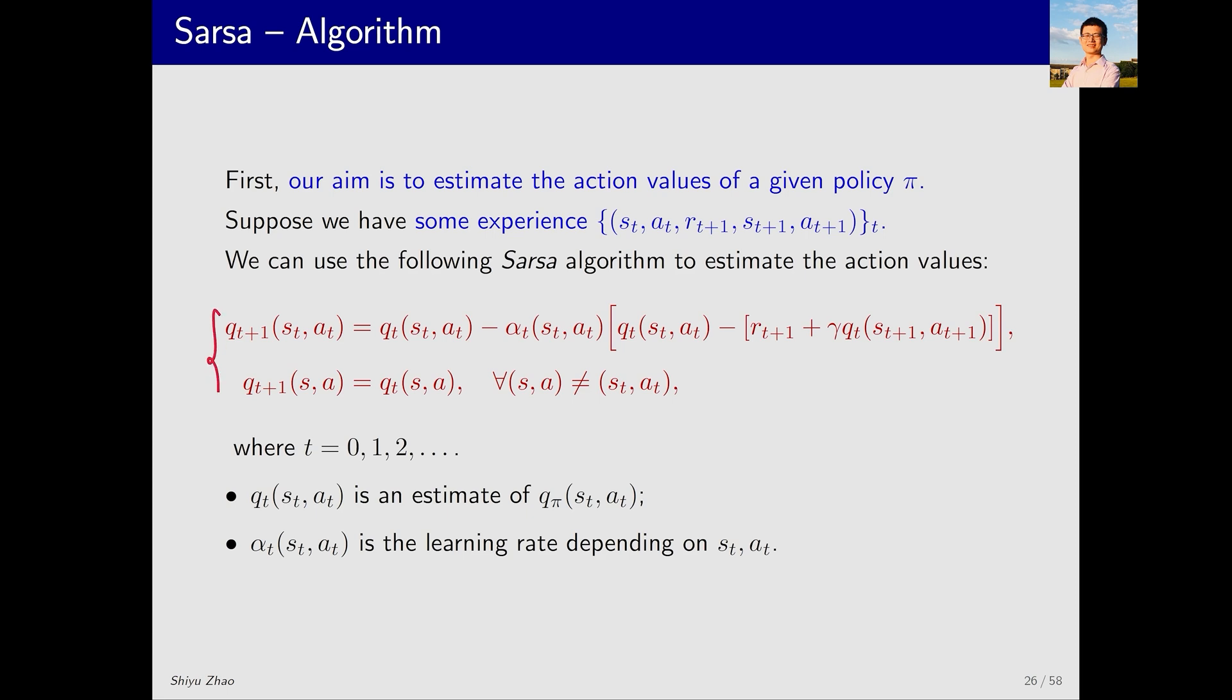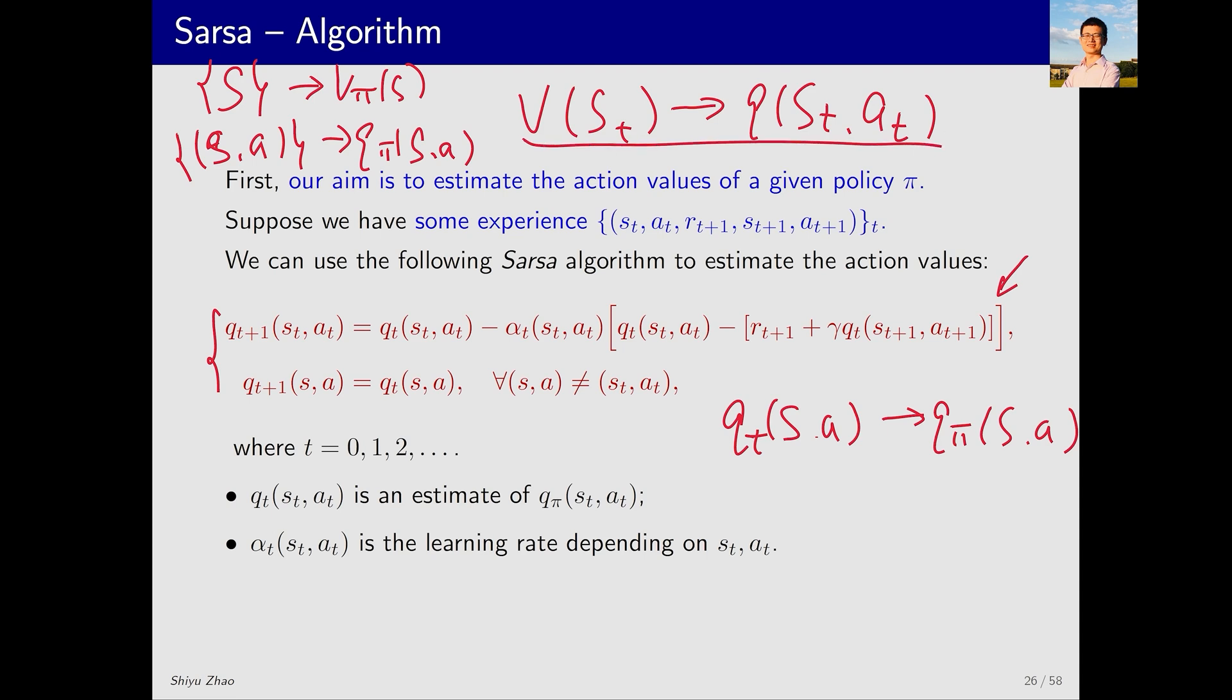We use this algorithm to update the estimates. Here, Q(s,a) is an estimate of Q_π(s,a). If it is Q_T, it is the estimate at time t. Let's look at the first equation. Q_{T+1} equals Q_T minus alpha times Q_T minus R_{t+1} plus gamma Q_T. This is identical to the TD algorithm we introduced earlier, except that instead of V(S_T), we now have Q(S_T, A_T). So previously for each state s, we estimated V_π(s). Now for each (s,a), we estimate Q_π(s,a). By making this simple substitution, we obtain this new algorithm. This is the first equation.